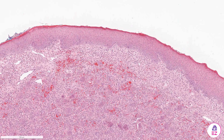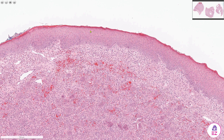Hello and welcome to Path Made Easy. Today we have a case of a peripheral giant cell granuloma. On the surface of this biopsy we have parakeratinised stratified squamous epithelium, but I'm not going to talk about that anymore because the area of interest is in the underlying connective tissue.